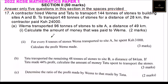We are told a contractor hired Wemma and Tati to transport 144 tons of stone to building sites A and B. To transport 48 tons of stone to a distance of 28 kilometers, the contractor paid 24,000. Wemma transported 96 tons of stone to site A at a distance of 49 kilometers. Calculate the amount of money that was paid to Wemma.